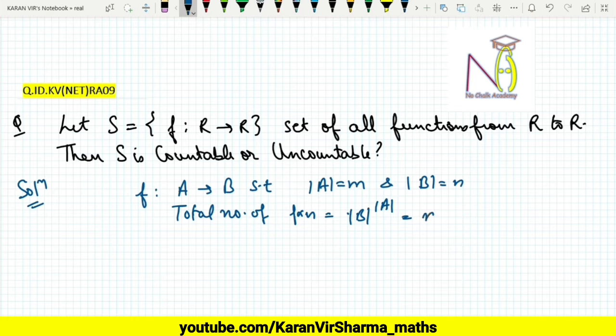Now in this question, we have f defined from R to R. So the total number of functions here will be the cardinality of R raised to the power of the cardinality of R, which is continuum raised to the power of continuum,